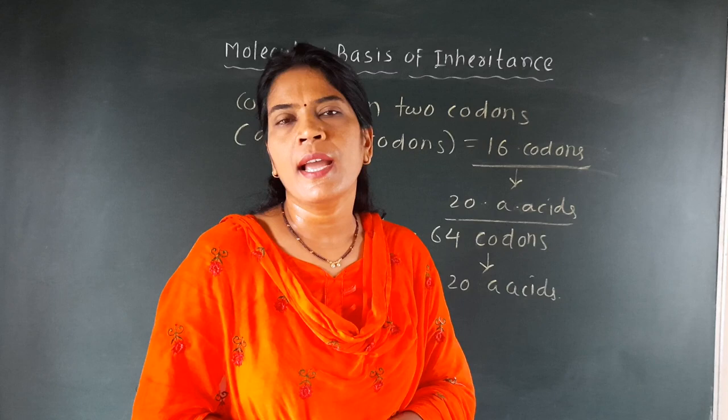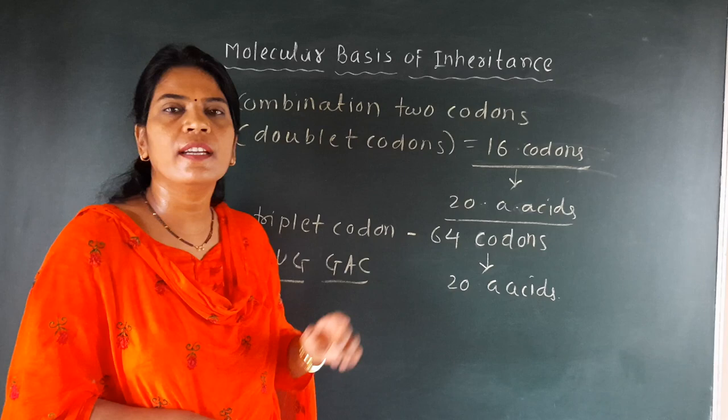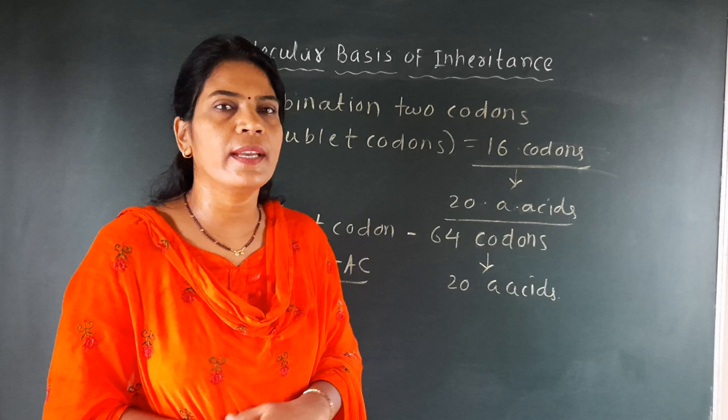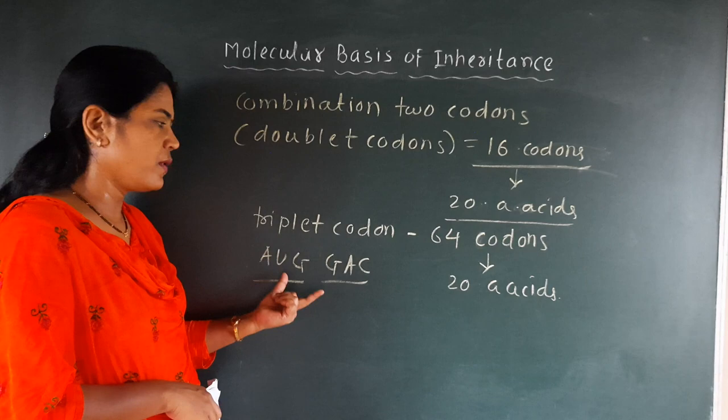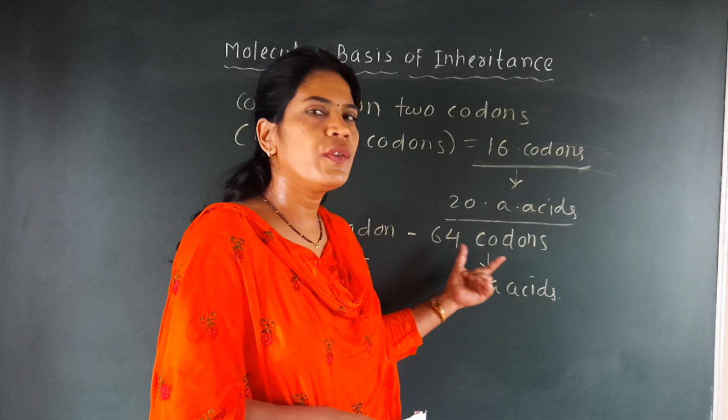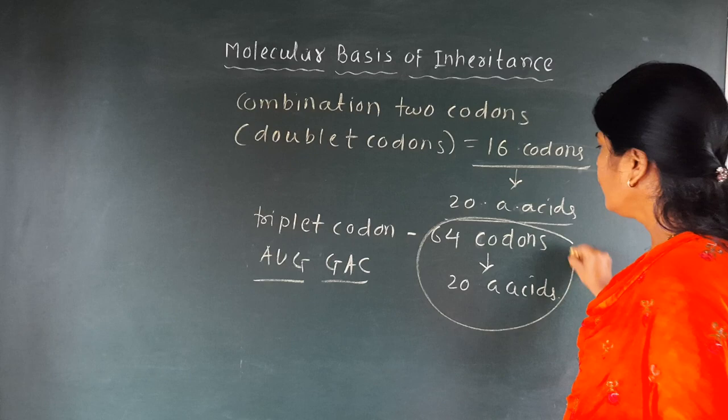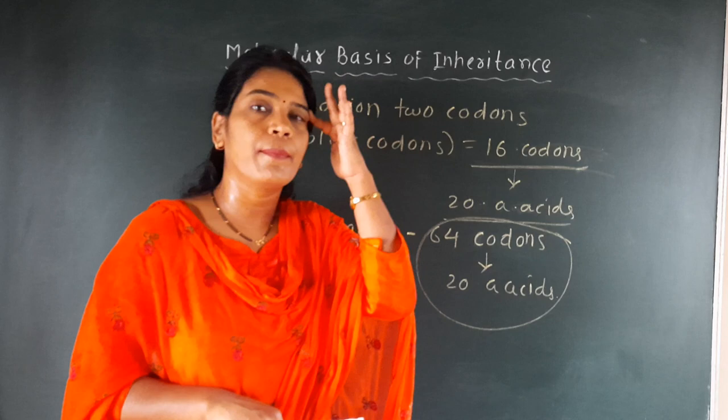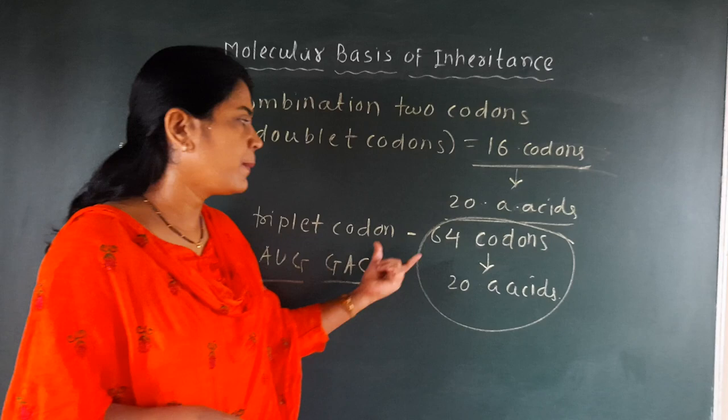They will form the 20 amino acids. So, this is about the codons: a single codon will code for only 4 amino acids. If two codons are taken into consideration, they will form 16 codons. If three codons or triplet codons are taken, they will form 64 codons. It is accepted that 64 codons will specify or code for the 20 amino acids.